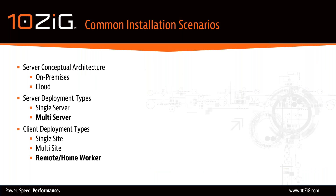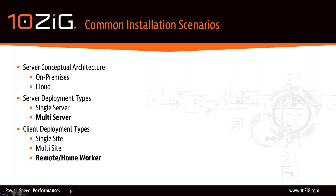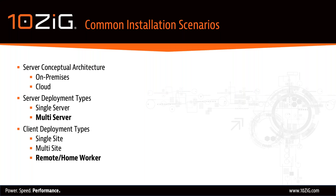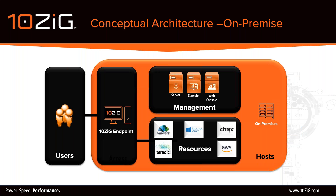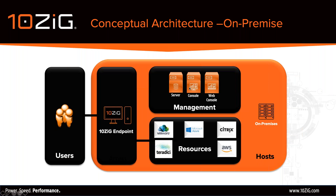We're now going to focus on common installation scenarios. We'll specifically home in on the multi-server and remote home-worker scenarios given how relevant they are today. This starts with the most basic example — where all resources are based in a singular on-premise location. This includes users who log into the Tenzing endpoints, which connect to their resources — referring to VDI, EUC, or server-based computing such as Citrix, VMware, and WVD. The Tenzing Manager is installed to a singular host for configuration and management.